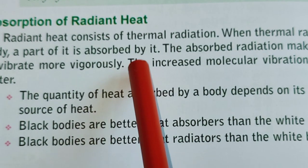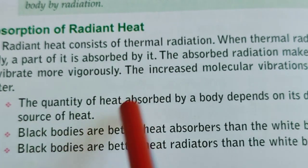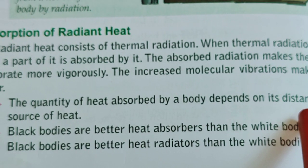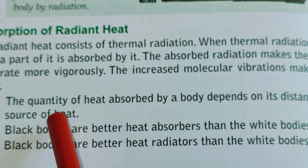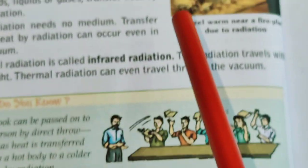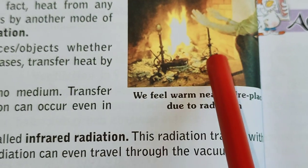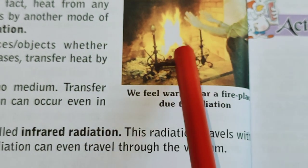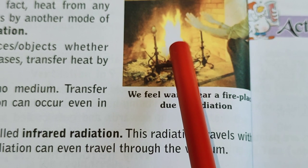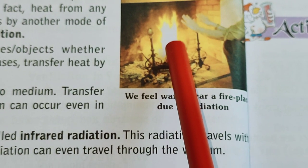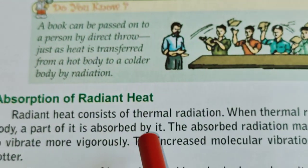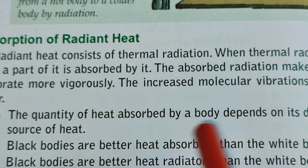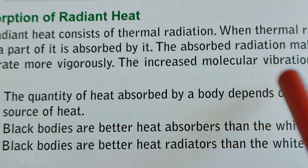The following features control the quantity of heat absorbed by a body in radiation. First, it depends on the body's distance from the source of heat. If you sit near the fireplace it will feel hotter — so it is clear that the quantity of heat absorbed by a body depends on its distance from the source of heat.